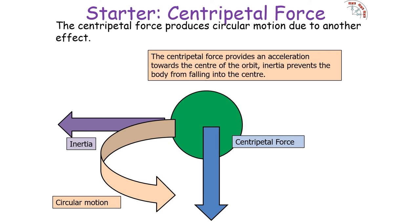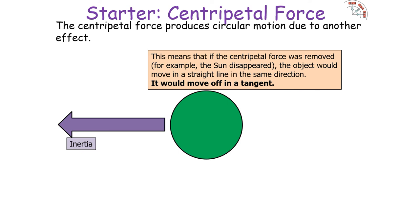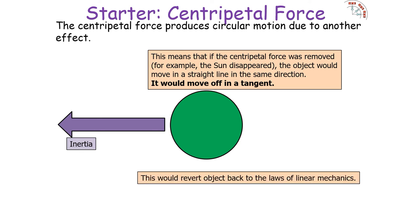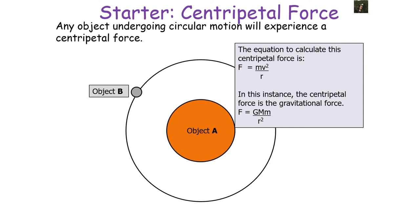Centripetal forces cause acceleration by deflection — changing the path of the object, not its speed. The centripetal force provides an acceleration towards the centre of an orbit, whilst inertia prevents the body from falling into the centre; these two effects combine to ensure the object follows a circular path. If the centripetal force were removed the object would move off in a tangent, reverting to linear mechanics. The equation for centripetal force is F = mv²/r.